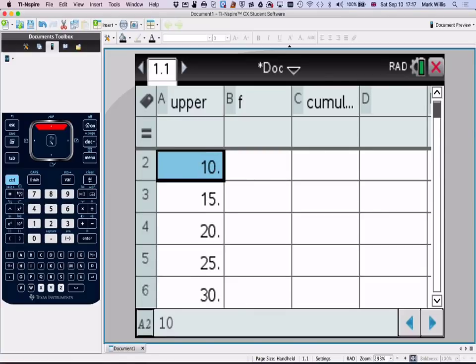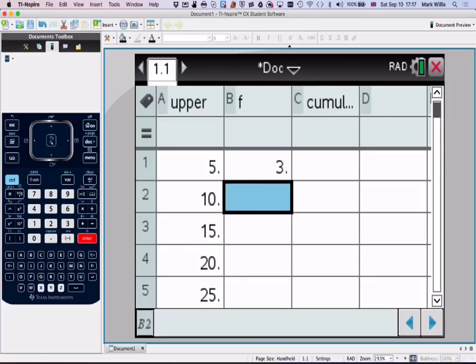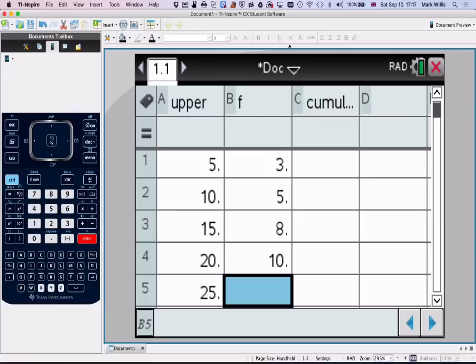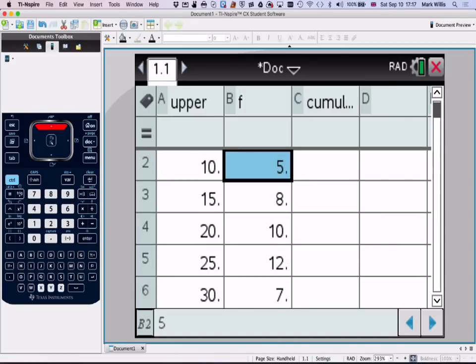Make sure you scroll back up to the top. And then we'll put in the original frequencies: 3, 5, 8, 10, 12, 7, 5.